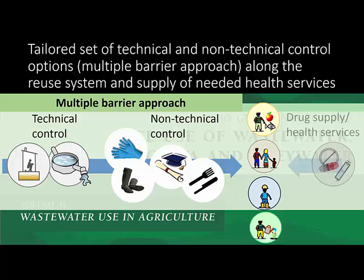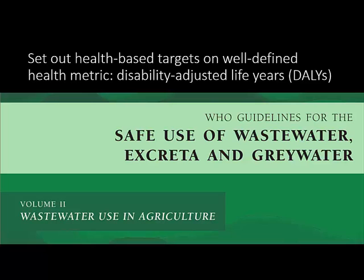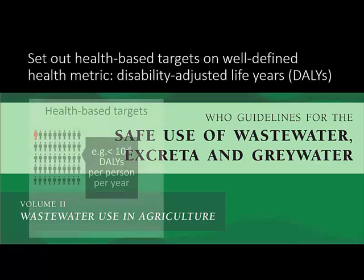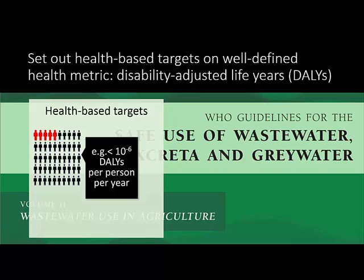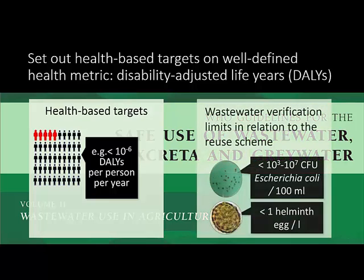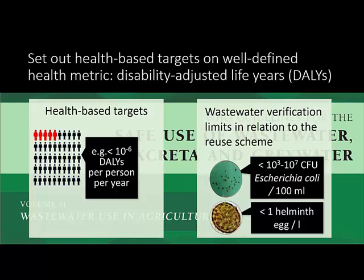In addition, health systems should also have the capacity to diagnose and manage main health issues. Health-based targets should be set at the national level and could be based on well-defined health metrics, such as disability-adjusted life years or DALYs per person per year. Health-based targets can be reached by adhering to verification limits for E. coli and helminth eggs in treated wastewater.